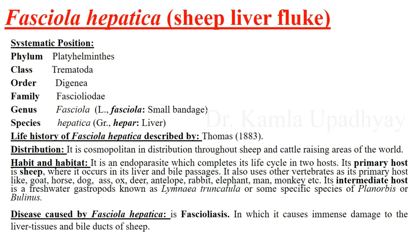The family is Fasciolidae because they have two suckers without hooks, the body looks like a leaf and is dorso-ventrally flattened, and they are hermaphrodite endoparasites. The genus Fasciola — in Latin, 'fasciola' means 'small bandage' — and the species name hepatica is based on the Greek word 'hepar' meaning liver.